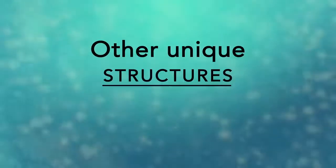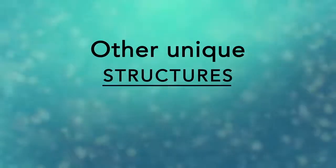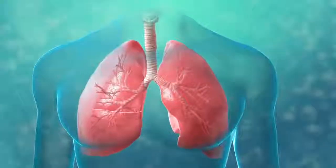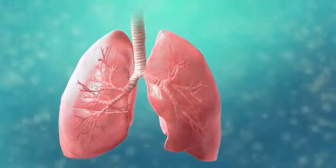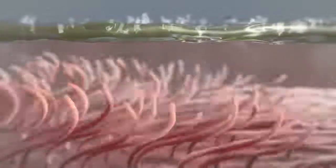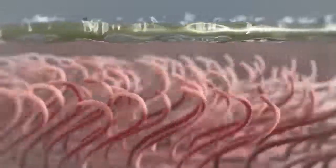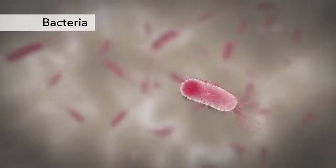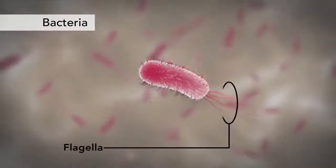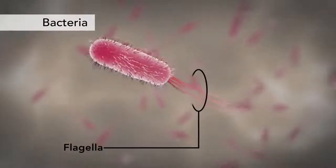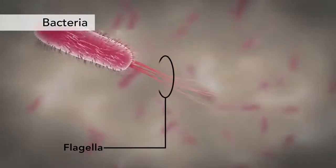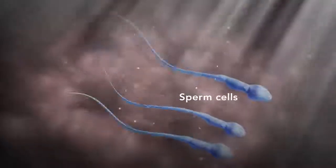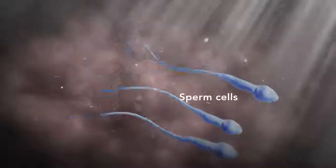There are many other unique structures that only some cells have. In humans, for example, the respiratory tract is lined with cells that have cilia. These are microscopic hair-like projections that can move in waves. This feature helps trap inhaled particles in the air and expels them when you cough. Another unique feature in some cells is flagella. Some bacteria have flagella. A flagellum is like a little tail that can help a cell move or propel itself. The only human cell that has a flagellum is a sperm cell.